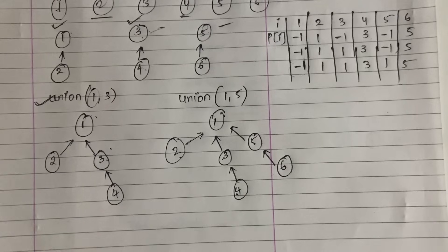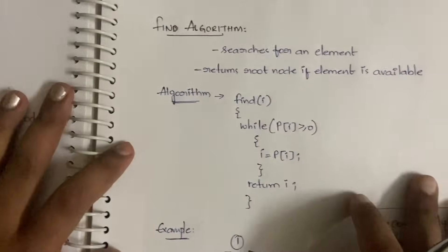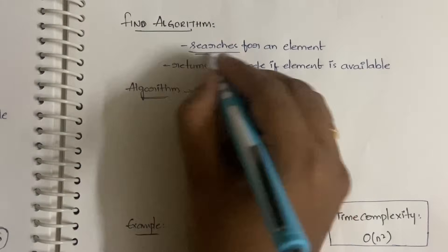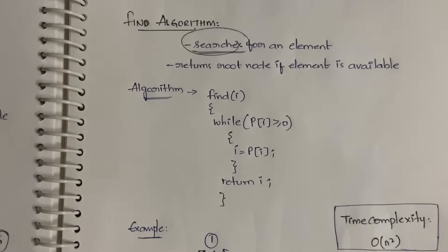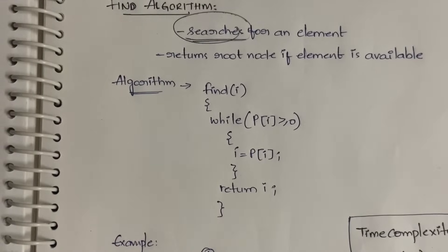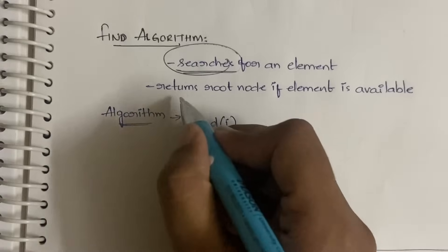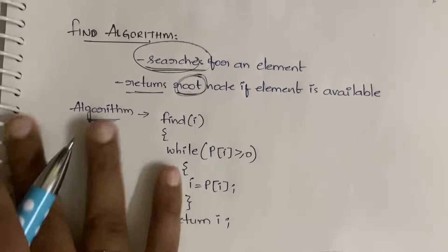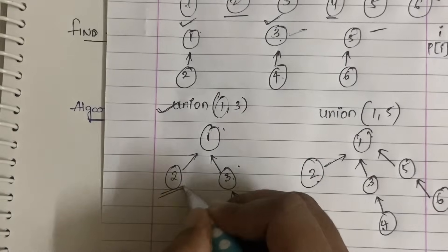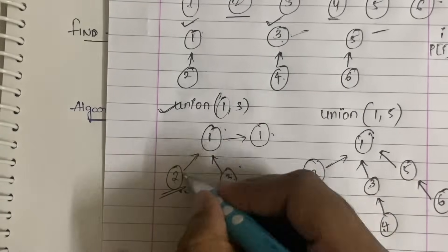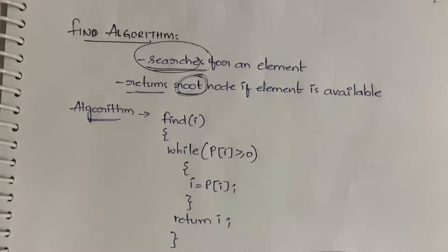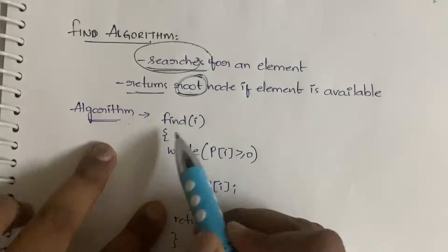Next we have weighted union, but for now let's see the find algorithm. Find means you are searching for an element — similar to binary search or linear search. What find returns is the root node of the respective element. For example, if you search for element two, it will return one, which is the root node.